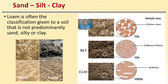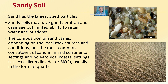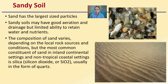Sand, silt, and clay particles — a loam is often the classification given to soil that is not predominantly sand, silt, or clay. Sandy soils have the largest particle sizes and are known to have good aeration and drainage, but a limited ability to hold water and nutrients. The composition of sand varies depending on local rock sources, but the most common constituent in inland continental and non-tropical coastal settings is silica, which is silicon dioxide (SiO2), usually in the form of quartz.